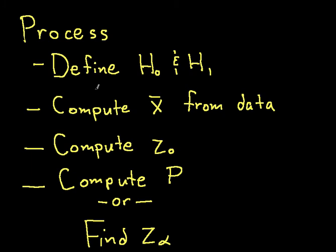So on the screen now is the process to perform a hypothesis test on the mean. The first thing we need to do is define hypothesis zero, our null hypothesis and hypothesis one. We've already done that.